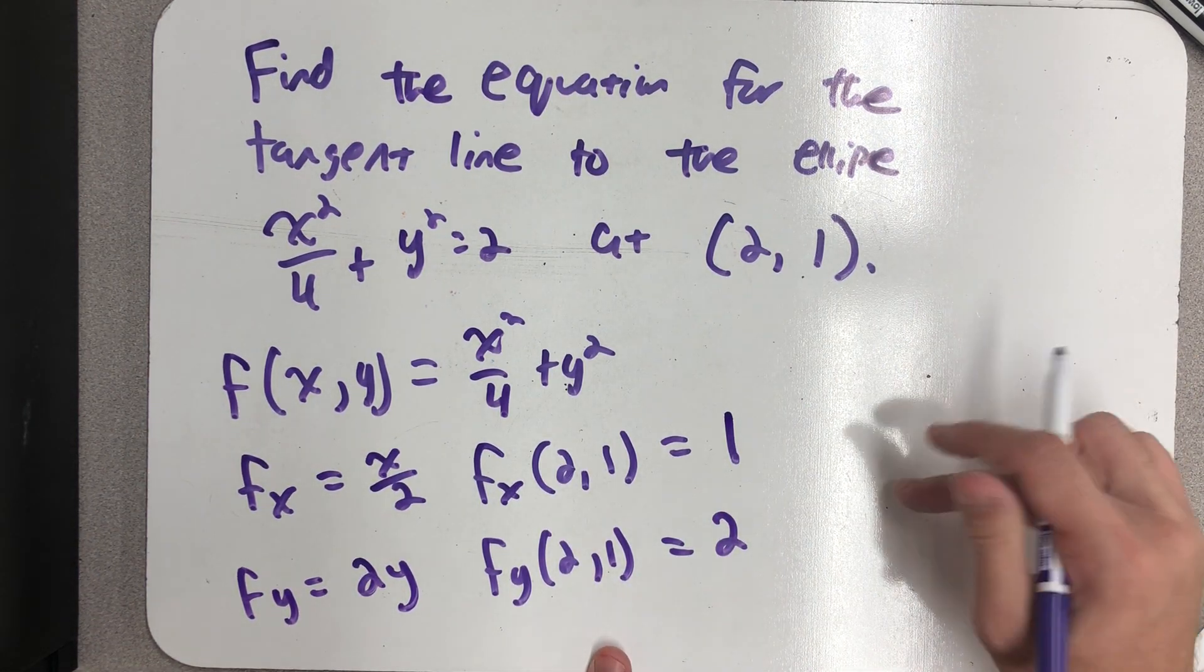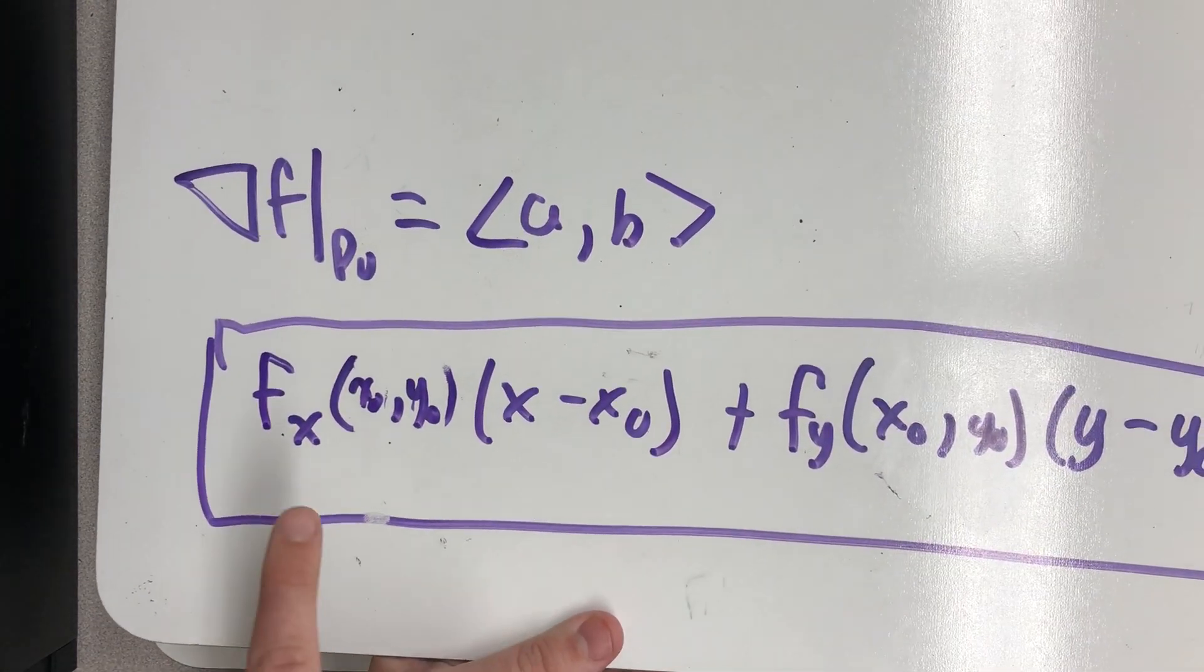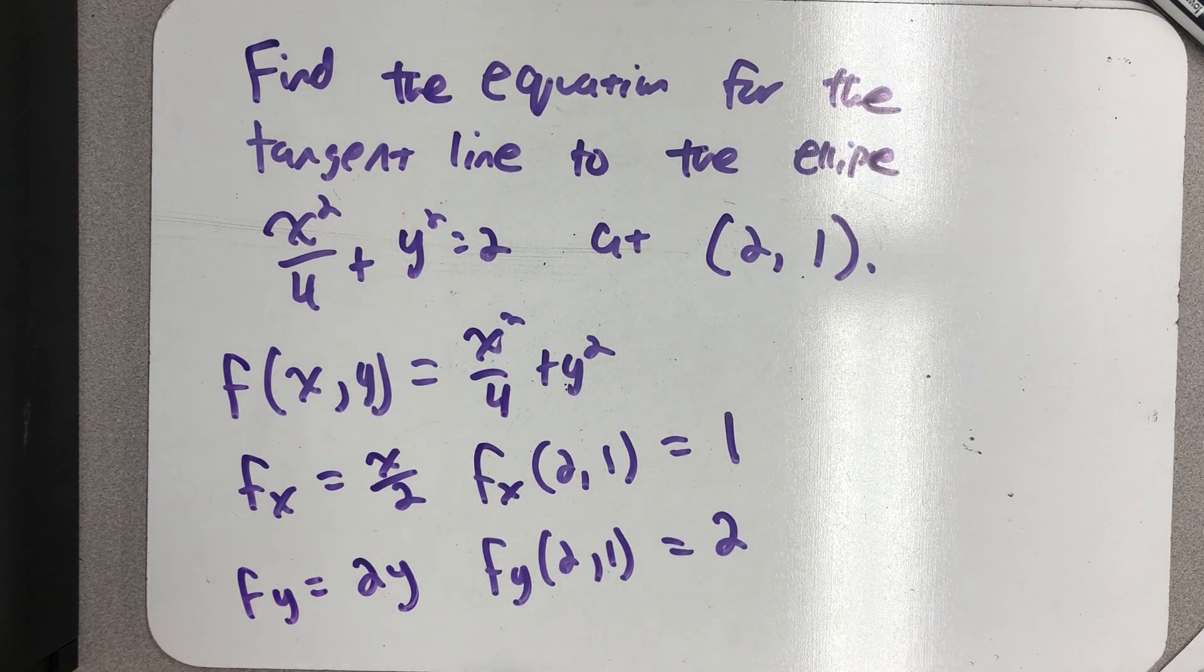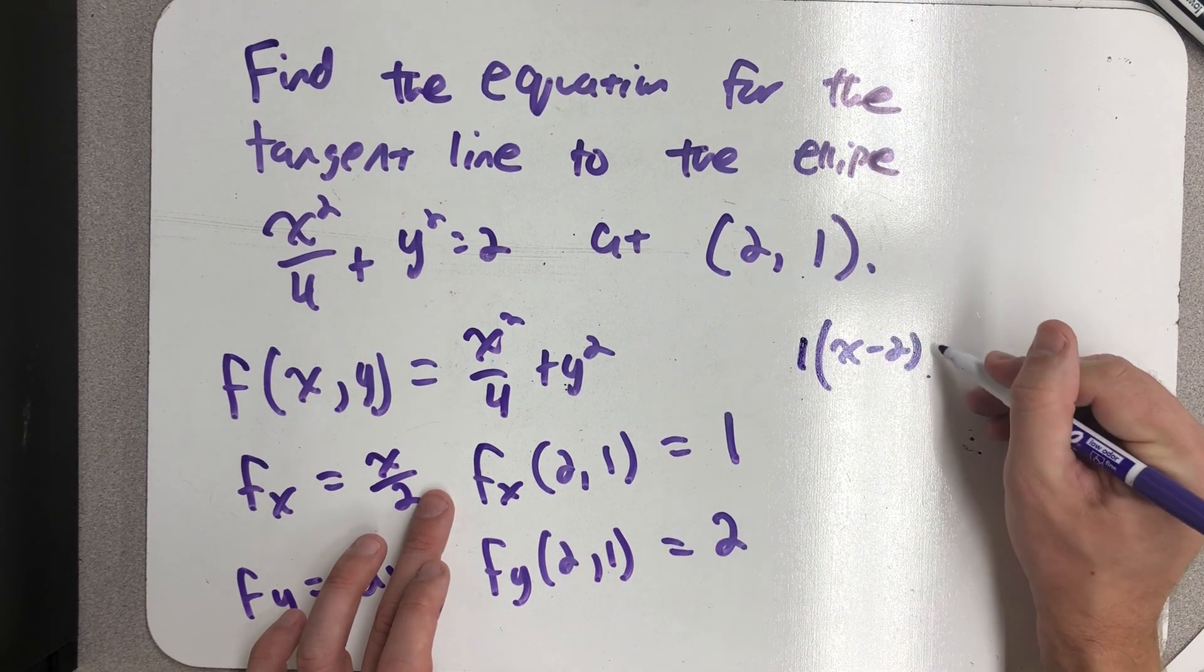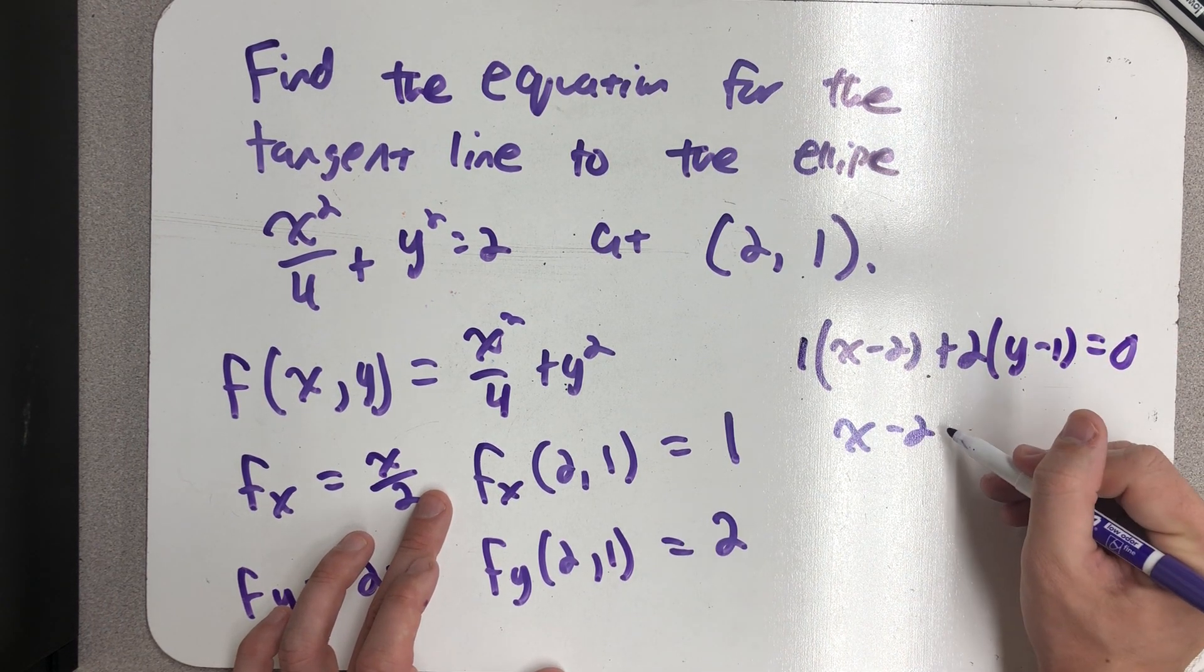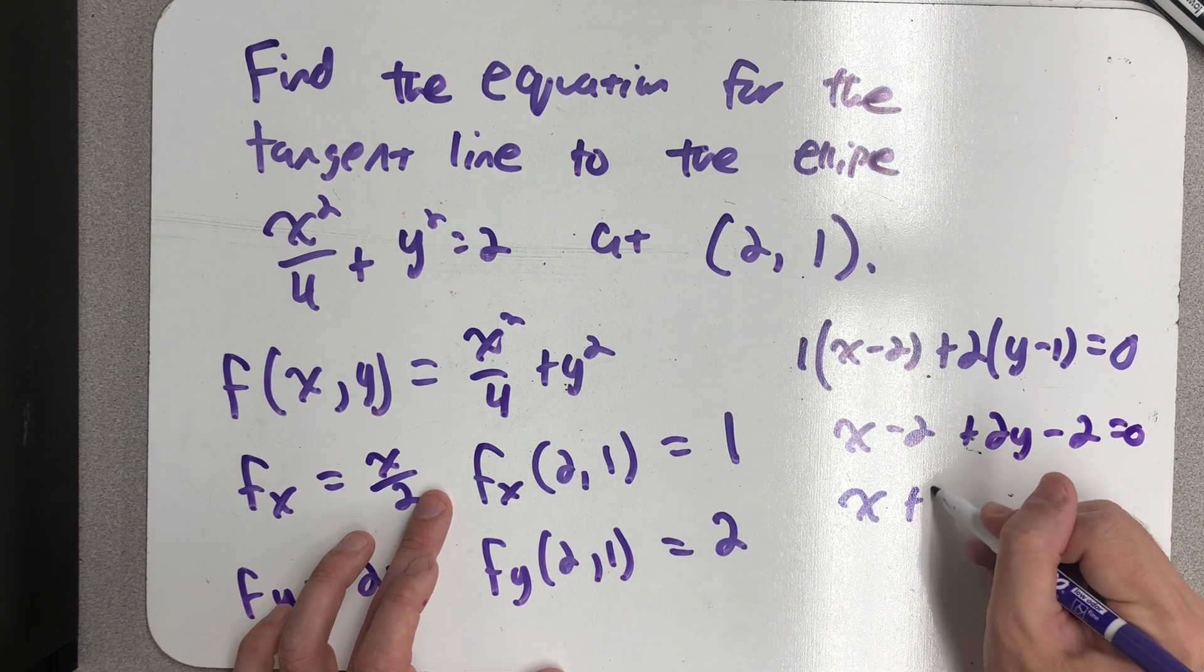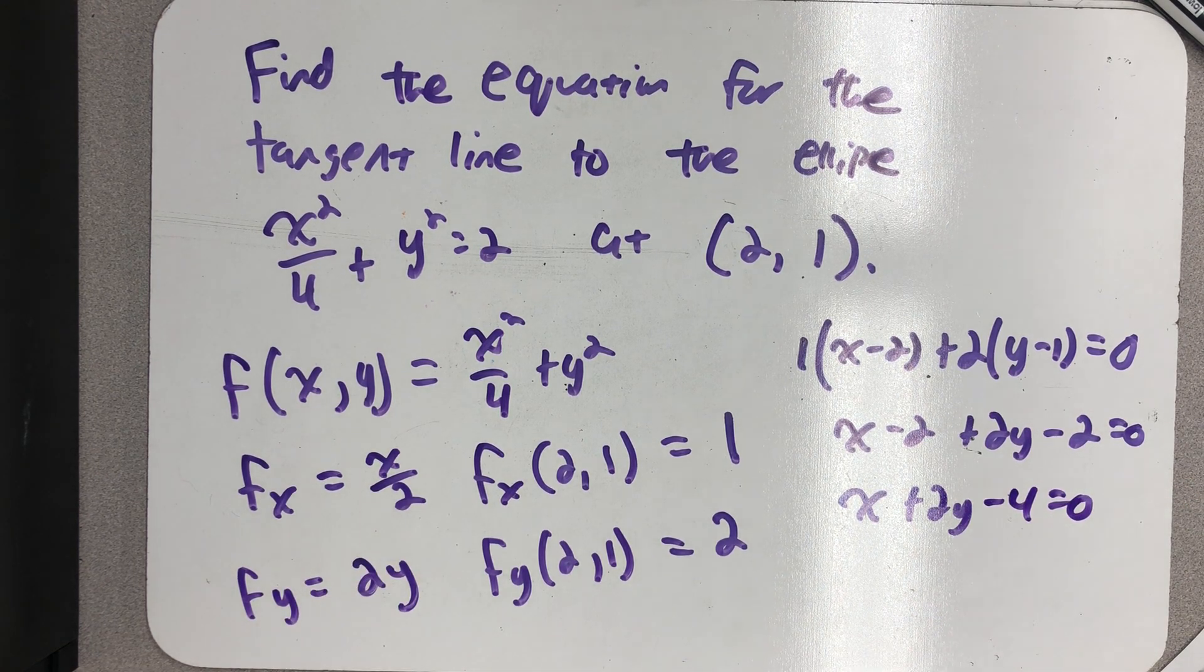And now, if I just go back to what we derived on the previous board, I have this partial, I have this partial, and I'm ready just to write down my equation. 1 times (x - 2) plus 2 times (y - 1) equals 0. So, x - 2 plus 2y - 2 equals 0. And pretty easy to write this in its general form. I always like writing lines in slope-intercept form.